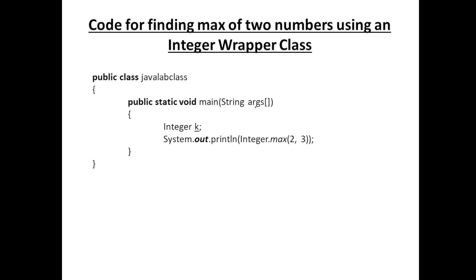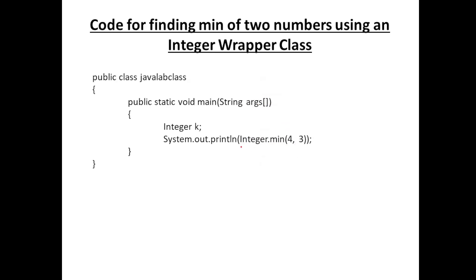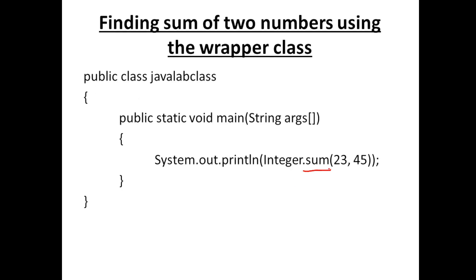There are also static methods to find max, min, and sum. 'Integer.max(2, 3)' returns 3. 'Integer.min(...)' returns the minimum. 'Integer.sum(23, 45)' returns the sum. Since these are static methods, you invoke them using the class name — no object creation needed. Just 'ClassName.methodName()'.